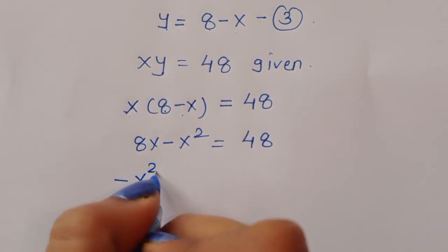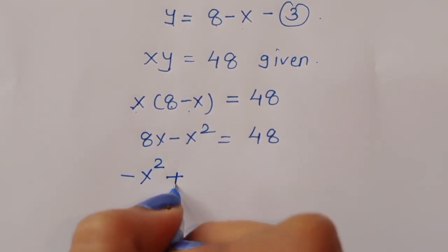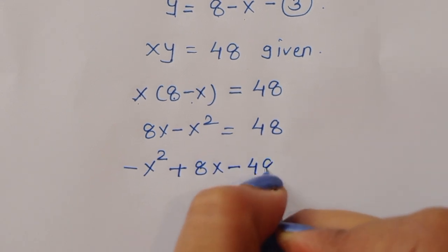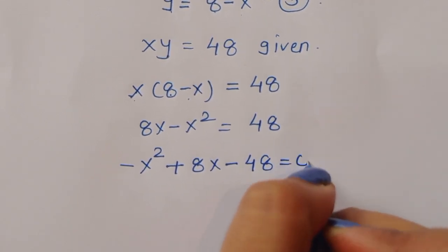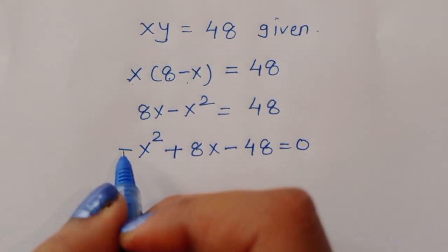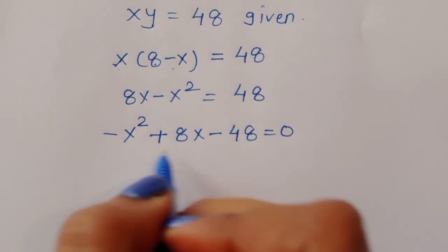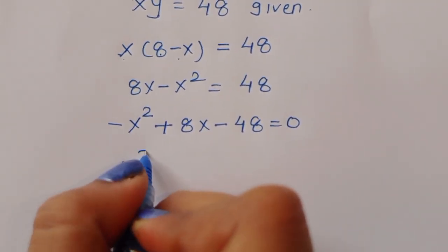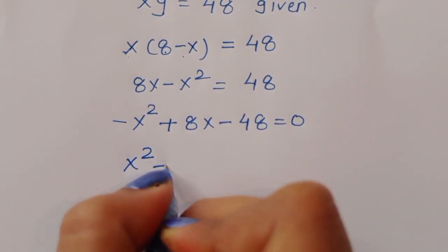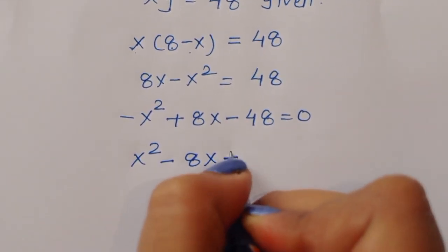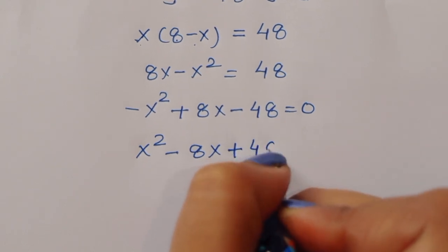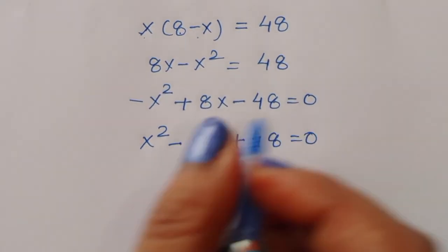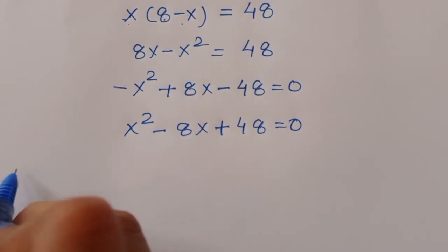Rearranging, we get minus x squared plus 8x minus 48 equals 0. Multiplying through by minus 1, we get x squared minus 8x plus 48 equals 0.